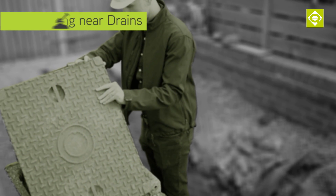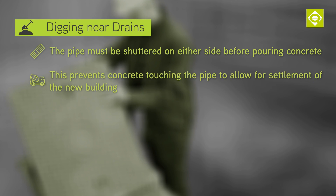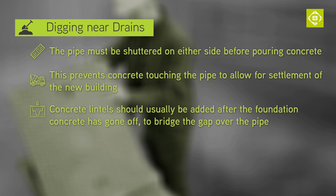Before pouring any concrete, it will be necessary to shutter off either side of the drainage so that none of the new concrete touches the pipe. This is done to allow for settlement of the new building. Once the concrete has been poured and has gone off, it is then usual for concrete lintels to bridge the gap over the pipe and between the different portions of the foundation.